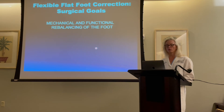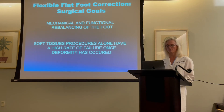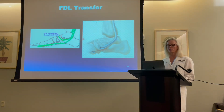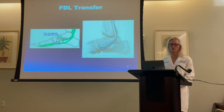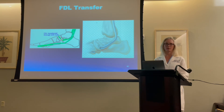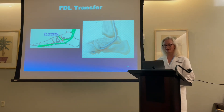The goals of a flat foot reconstruction are a mechanical and functional rebalancing of the foot. Soft tissue procedures alone have a high rate of failure, so it's a combination of soft tissue and bone correction. For the soft tissue realignment, you take the tendon which bends the tips of the toes and runs out here, and you swing it around to where the posterior tibial tendon attaches. You can either sew it together or remove the tendon entirely and just replace the tendon with the toe tendon.